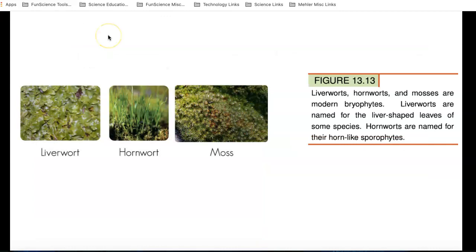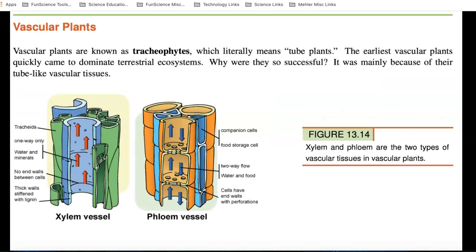The three types of bryophytes or non-vascular plants that are still around today are liverwort, hornwort, and mosses. Liverworts are named for their liver-shaped leaves. Hornworts are named for their horn-like sporophytes, these things coming out right here. And many of us have seen mosses on the floor of forests.